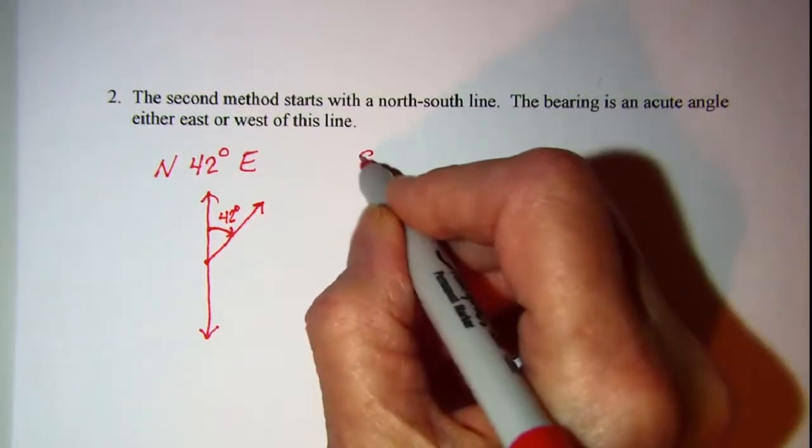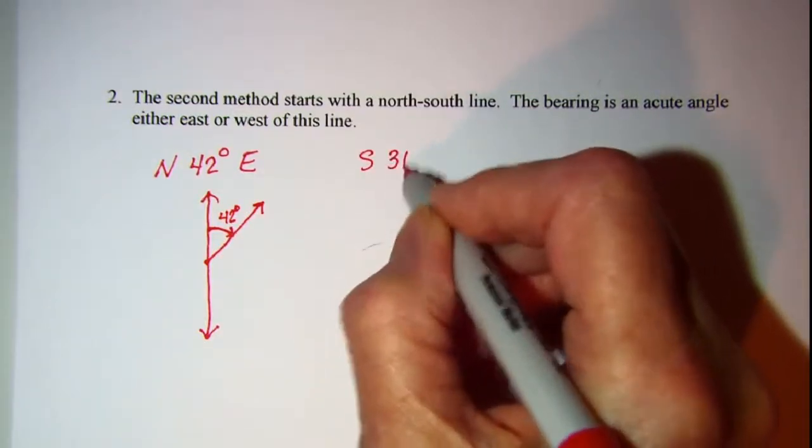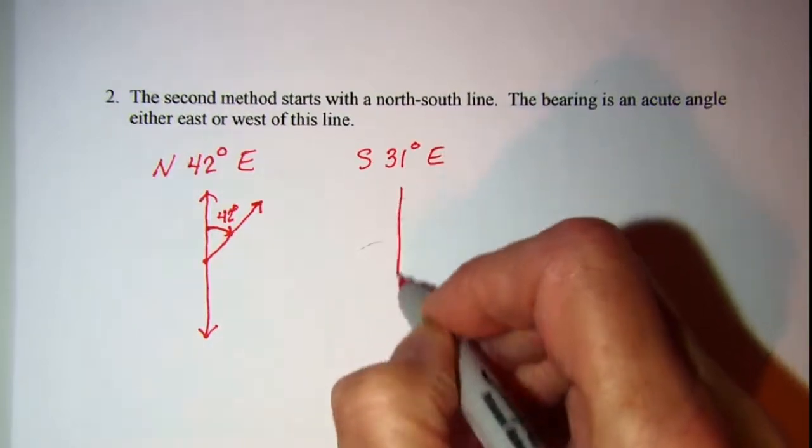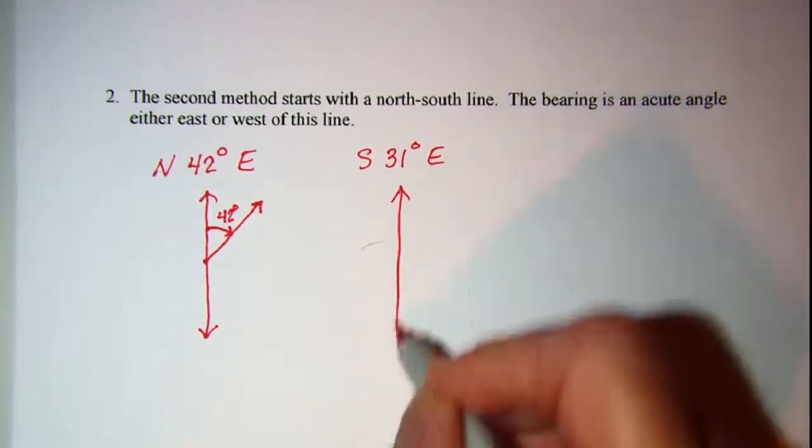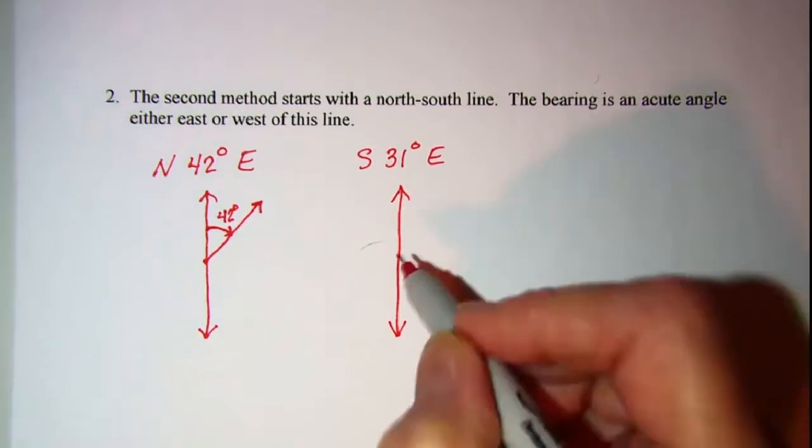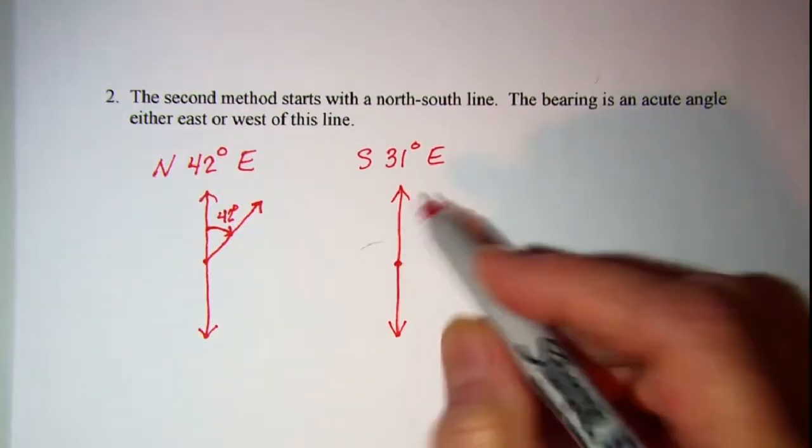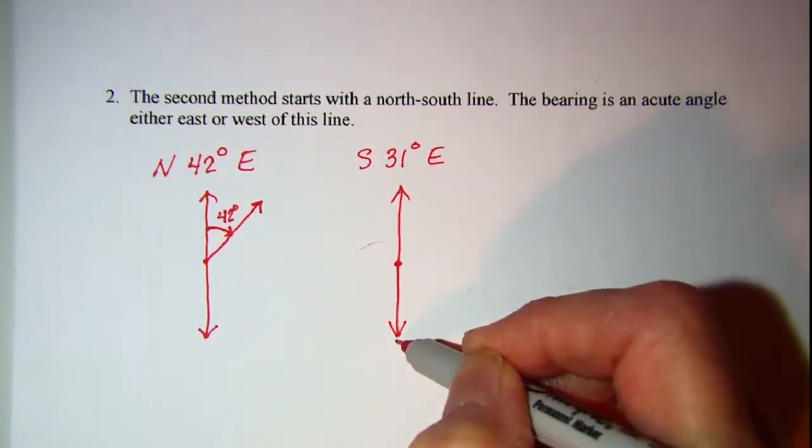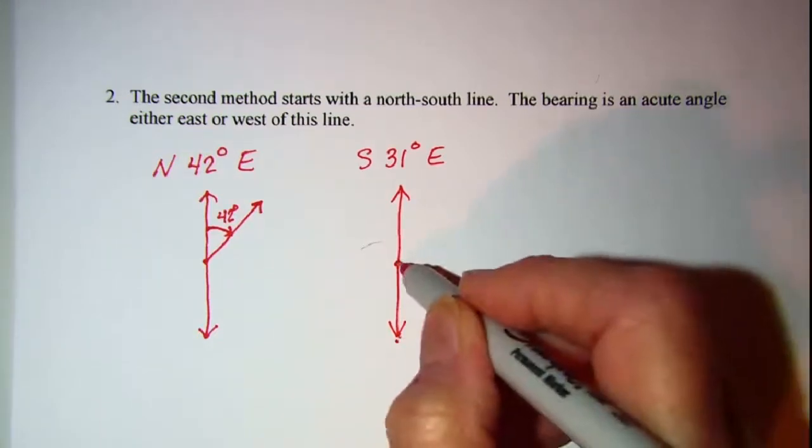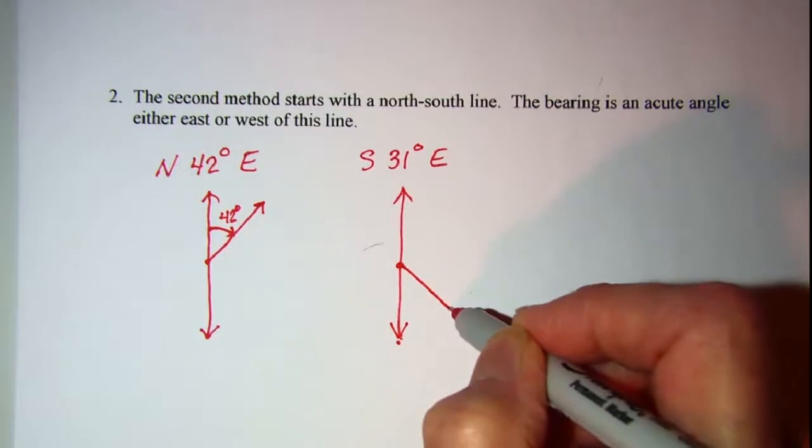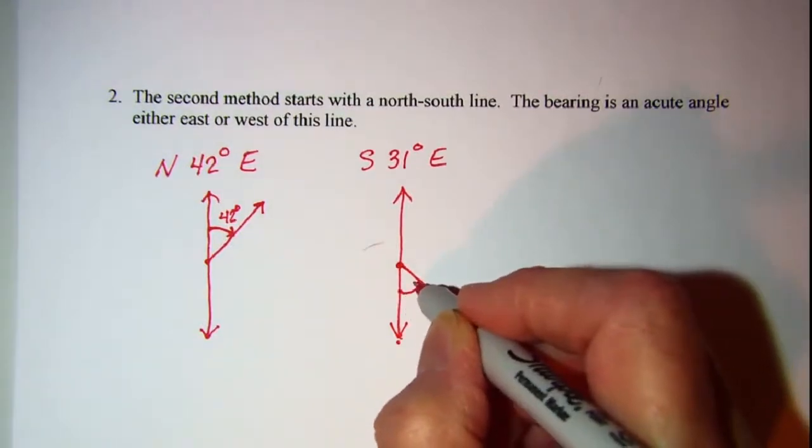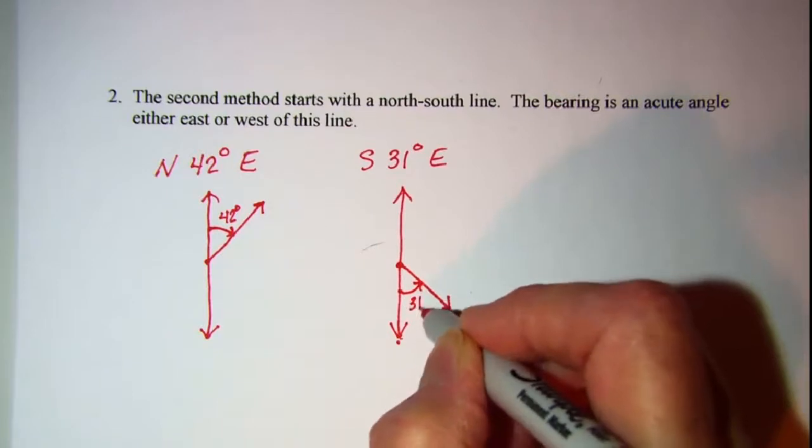A bearing of south 31 degrees east, again we start with our north-south line, only this time from the south line we go 31 degrees east, so our terminal side would end up here and this angle would be 31 degrees.